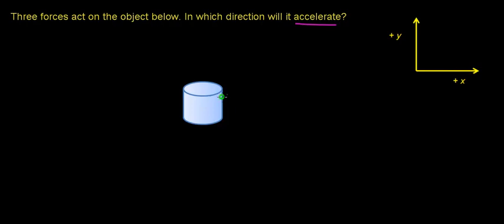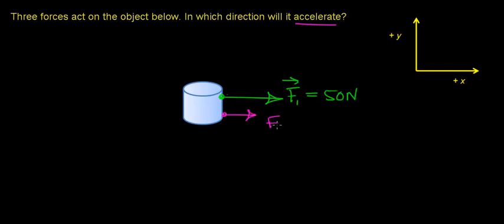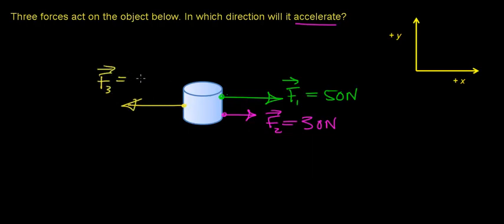The first force acting on this object is pulling it in the positive x direction — we'll label this F1 as a vector, and that force is equal to 50 Newtons. We have another force pulling on this object, which we'll call F2 as a vector, and that force is equal to 30 Newtons. Then there's one more force acting on this object pulling it in the opposite direction, F3, with a magnitude of 40 Newtons.